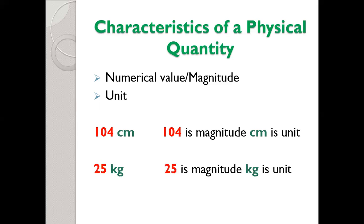Let's look at another example: 25 kg. So 25 kg is basically mass, and as we have discussed, mass is a physical quantity. In 25 kg, 25 is the magnitude or numerical value, and kg is the unit in which mass is measured.